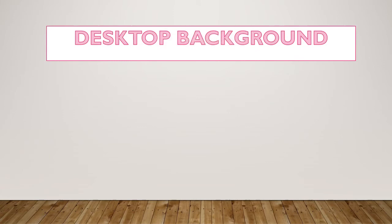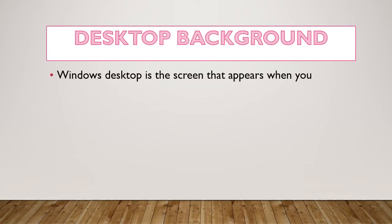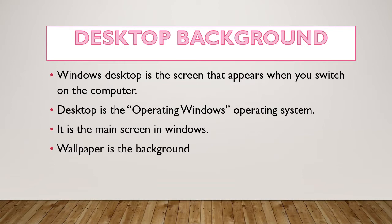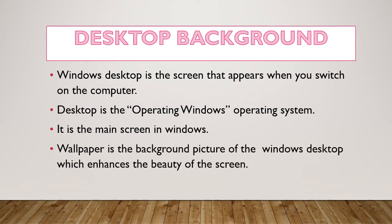The first topic is desktop background. The Windows desktop is the screen that appears when we switch on our computer system. Whatever is visible on the screen after switching on the computer is known as the desktop — it is the main screen in Windows. Wallpaper is the background picture of the Windows desktop, which enhances the beauty of the screen. So basically, desktop background is the wallpaper — the background picture of the window.